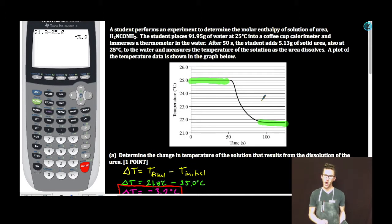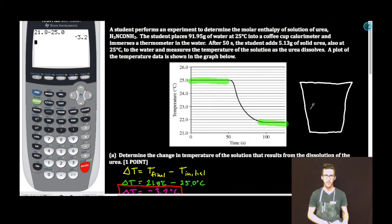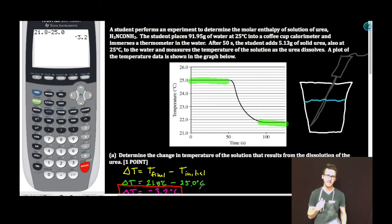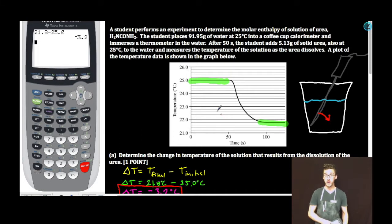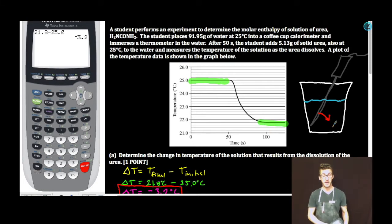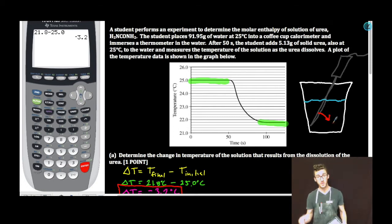Some of you might be saying: endothermic, but we had a decrease in temperature. Think about your coffee cup calorimeter — there's the temperature probe with solution. The way I like to think about this is that the temperature probe must have been giving off heat if we go from an initial temperature of 25 degrees Celsius to a final temperature of 21.8, which means that the dissolution process of urea in water is absorbing or requiring that heat. Endothermic.